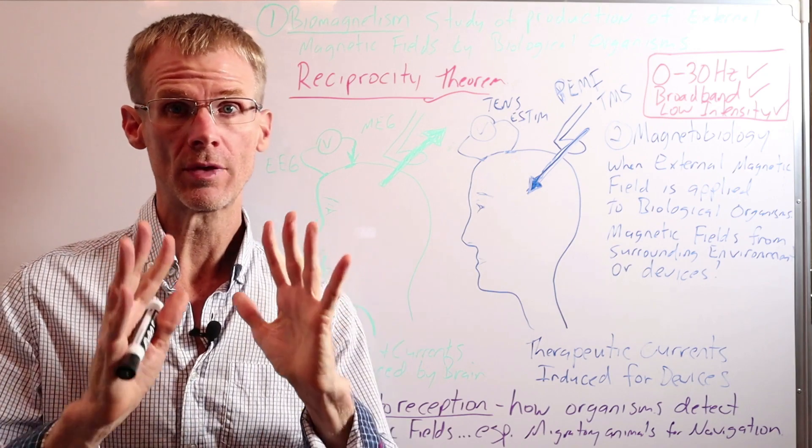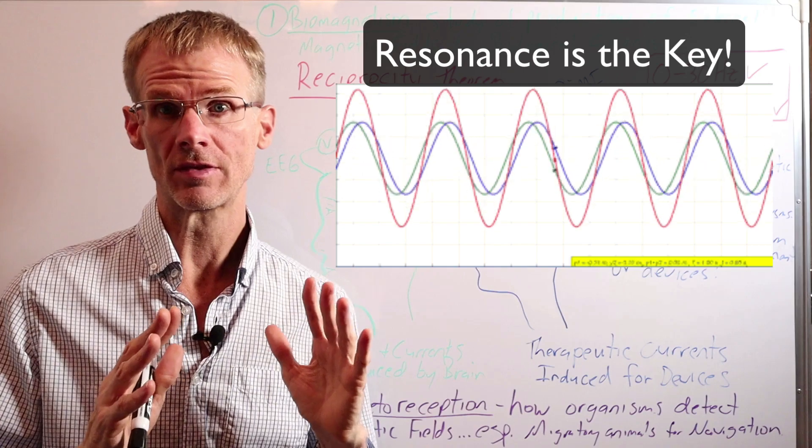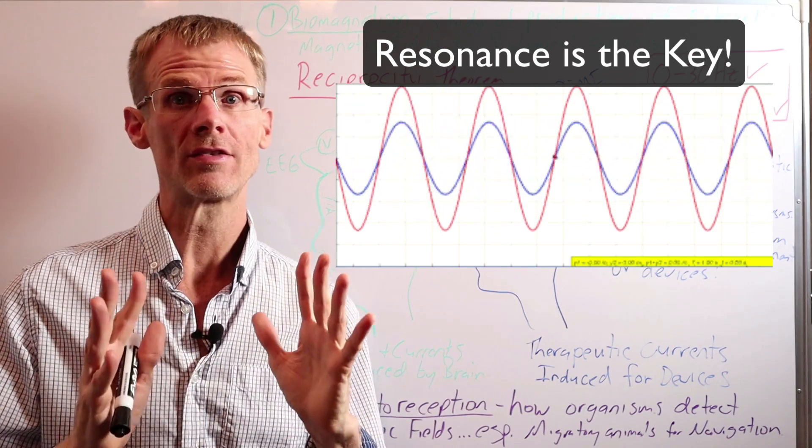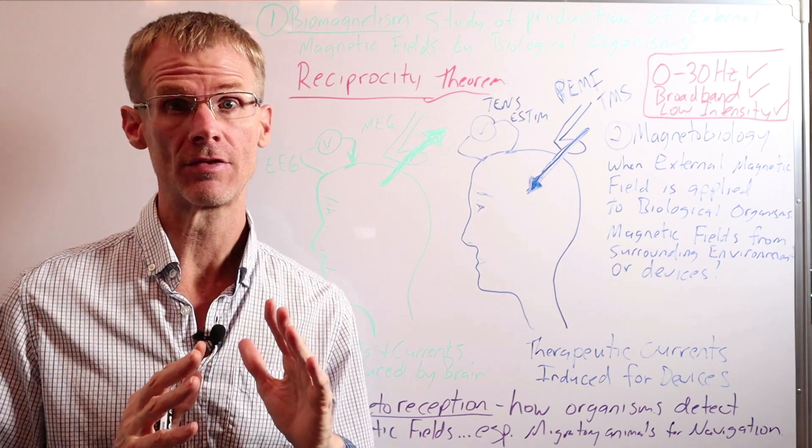Before we move on, I just want to mention that the whole key to the Pioneer 10 being able to transmit a signal 7.6 billion miles is resonance. And I did a whole video on resonance, and I'll put a link at the end of this video.